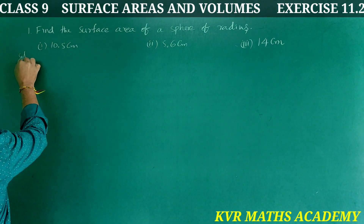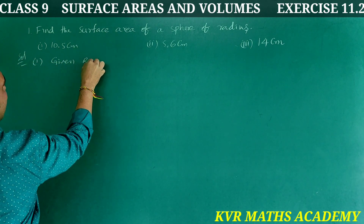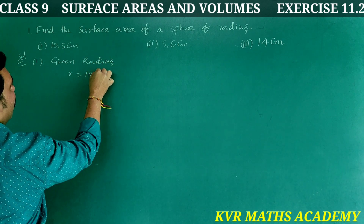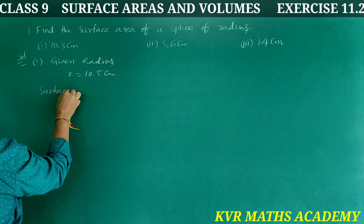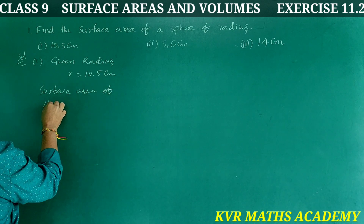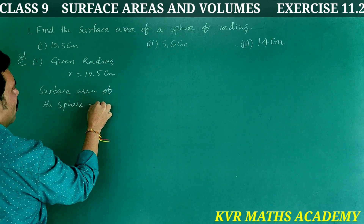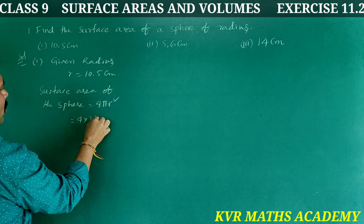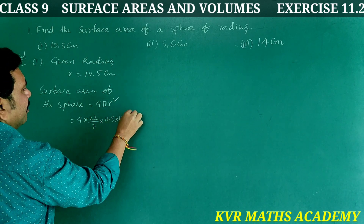Solution. First one: given radius r = 10.5 centimeters. Surface area of the sphere = 4πr² = 4 × (22/7) × 10.5 × 10.5.